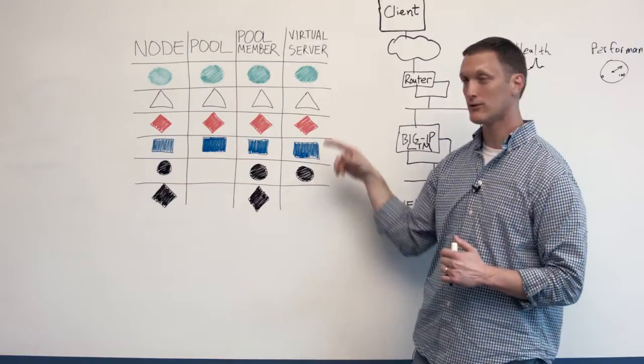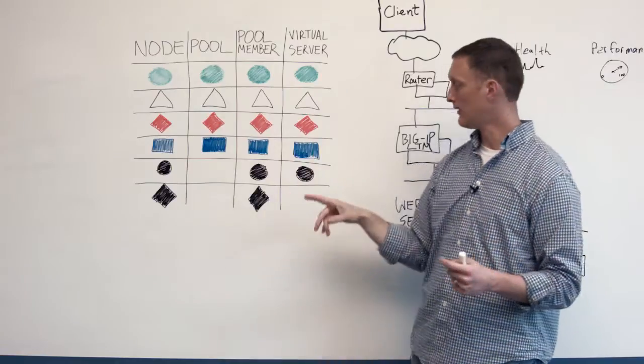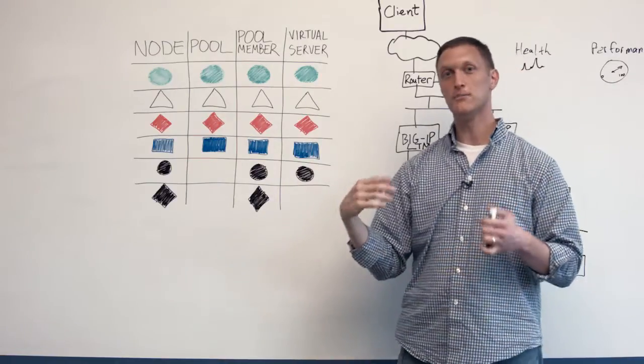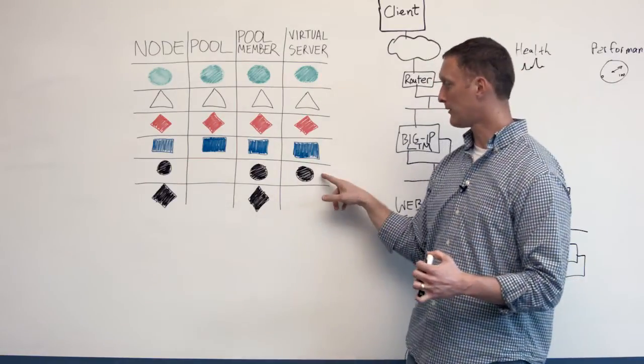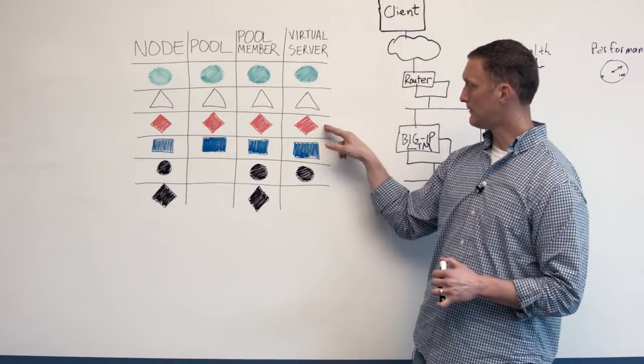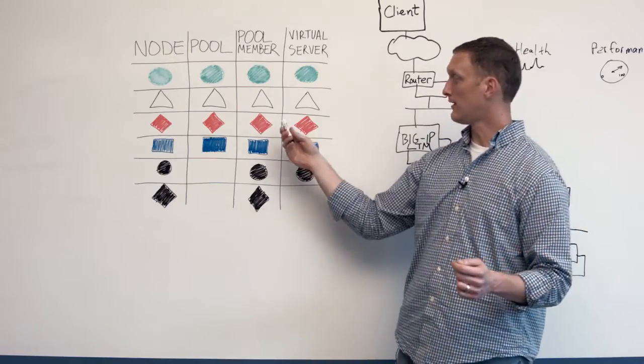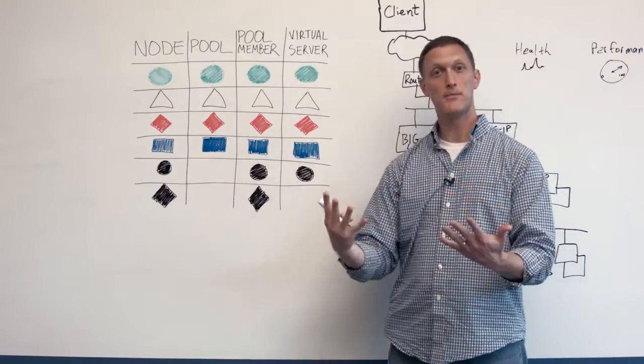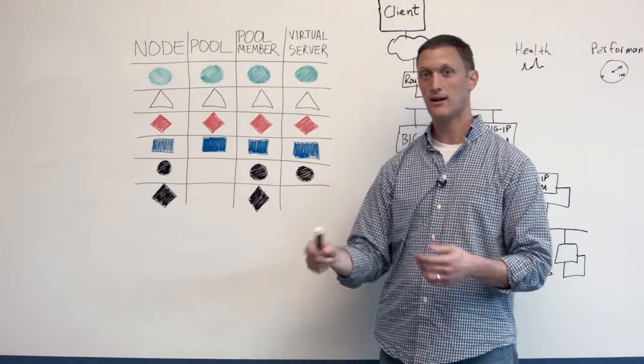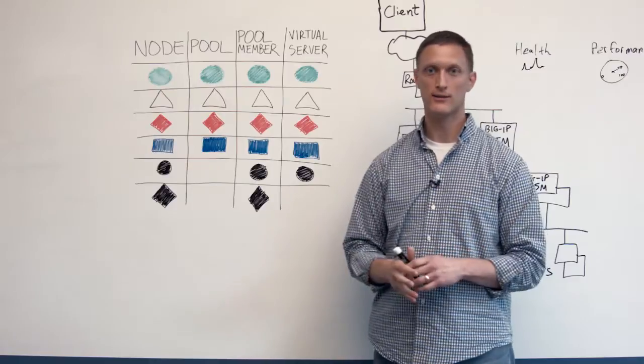Really quick to break it down between the two different types of circles: there's a green circle which means it's available, it's enabled, it's ready to go. A black circle means that you administratively did something, you said hey I want this to be marked unavailable. And then the red diamond versus the black diamond basically means that the red diamond means that the Big IP said hey this thing's down right now, and the black diamond means that you administratively forced it offline.